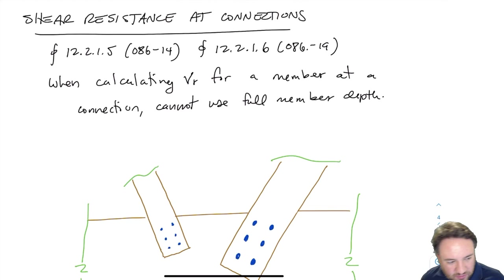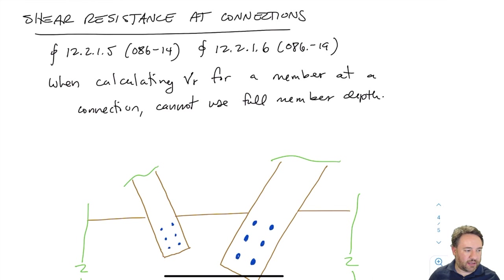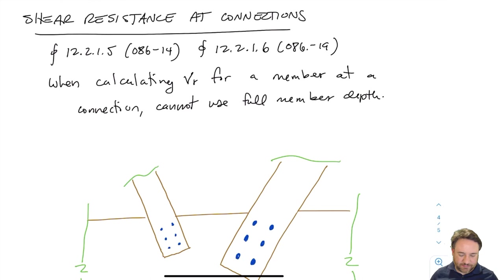Now, if I have a connection and I'm calculating the shear strength of my member — where the shear in the member is caused by connected elements attached to the side with a bolted or nailed connection — then when I calculate my VR, my longitudinal shear resistance, I am not permitted to use the full member depth. Basically, these members are going to be subject to splitting.